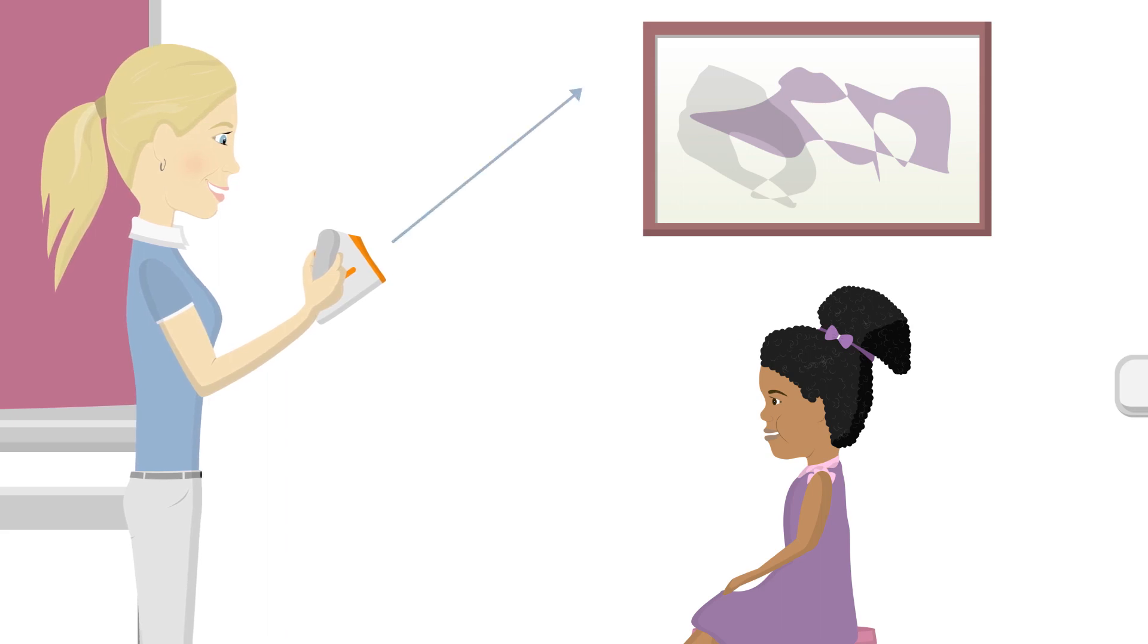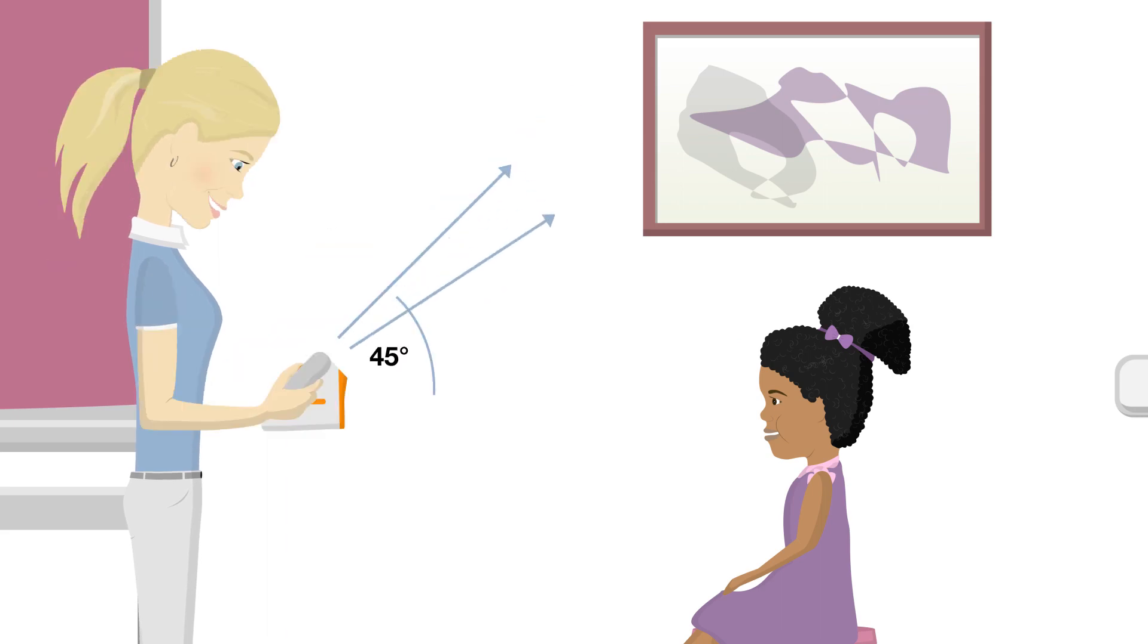Hold the device at a 45-degree angle. The device should be held level and flush with the child's eyes. Instruct the child to look directly at the nose of the smiley face.